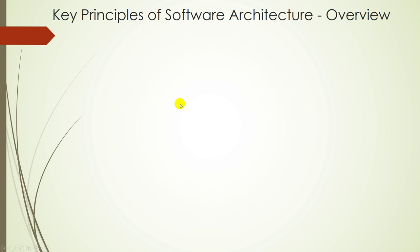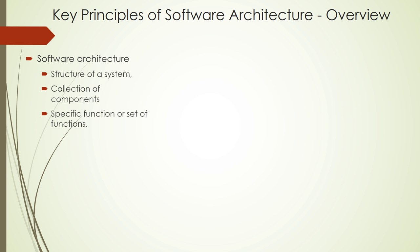Let's have a quick overview at the beginning. Software architecture is often described as an organization or structure of a system where the system represents a collection of components that accomplish a specific function or set of functions. In other words, architecture is focused on organizing components to support a specific functionality.